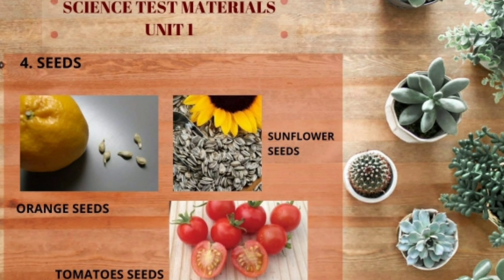Here are the examples of seeds: orange seeds, sunflower seeds, and tomato seeds. Kids, you have already made a project about planting plants — growing seeds, right? Now I have a question: what do you need to plant a seed? Very good! We need soil, seeds, a pot plant or polybags, and we need water.